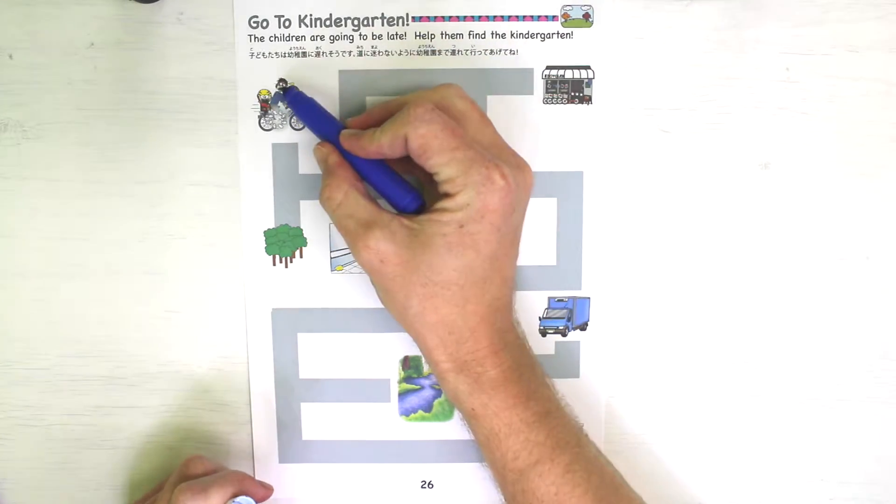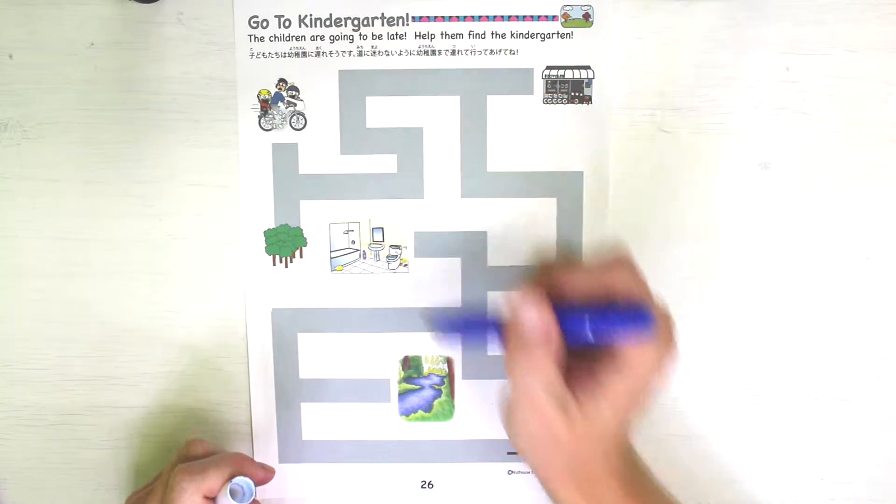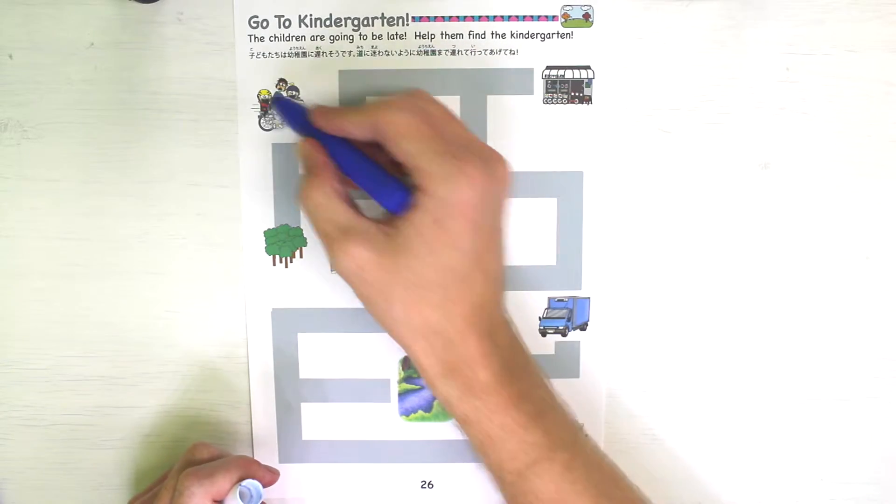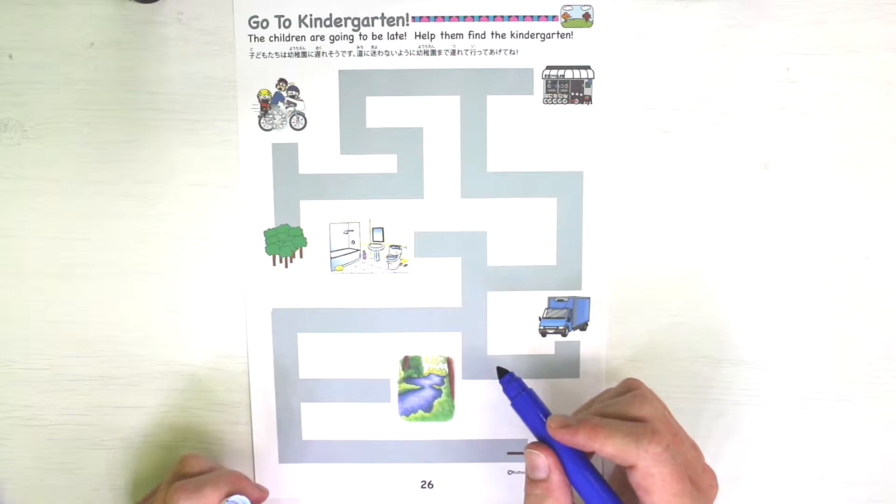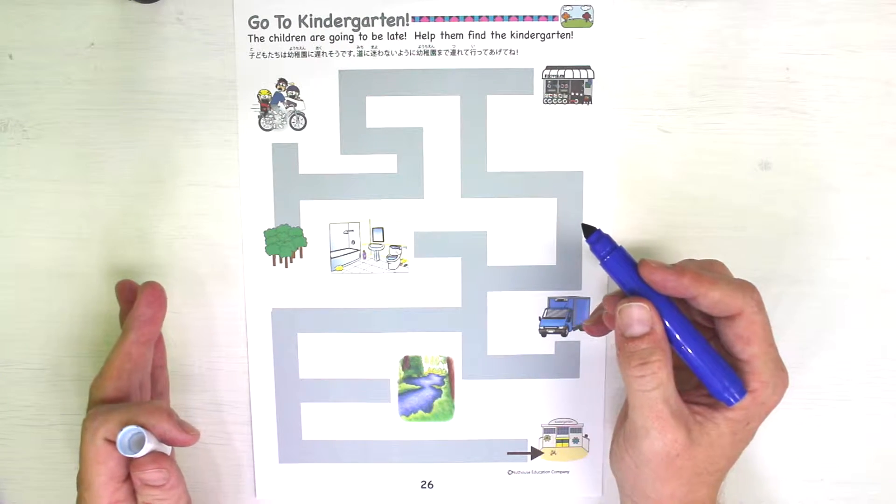First, who's this? Mommy, good. Who's this? Jill, good. Who's this? Jay, nice. So let's help them find the kindergarten.